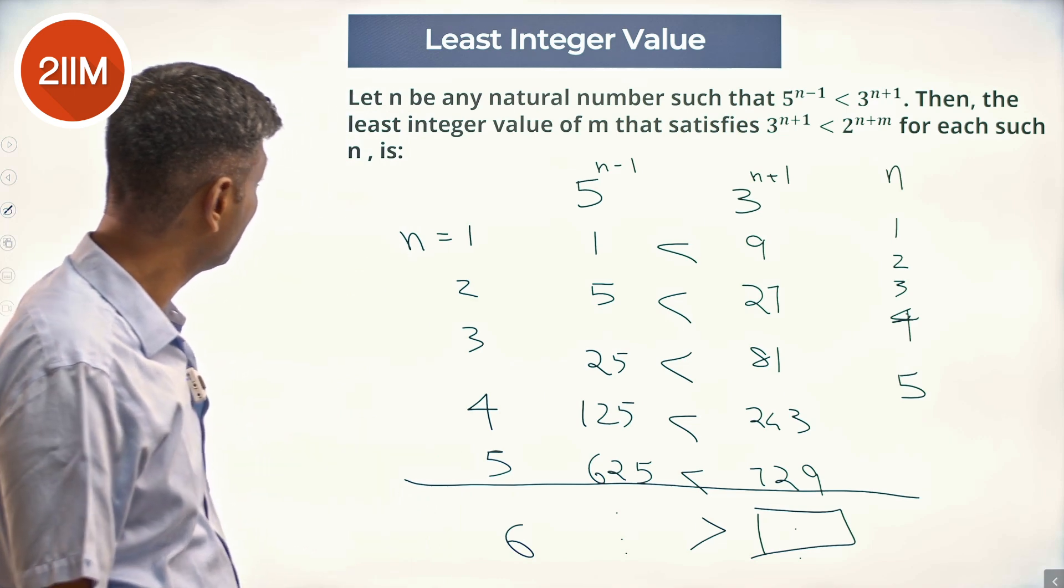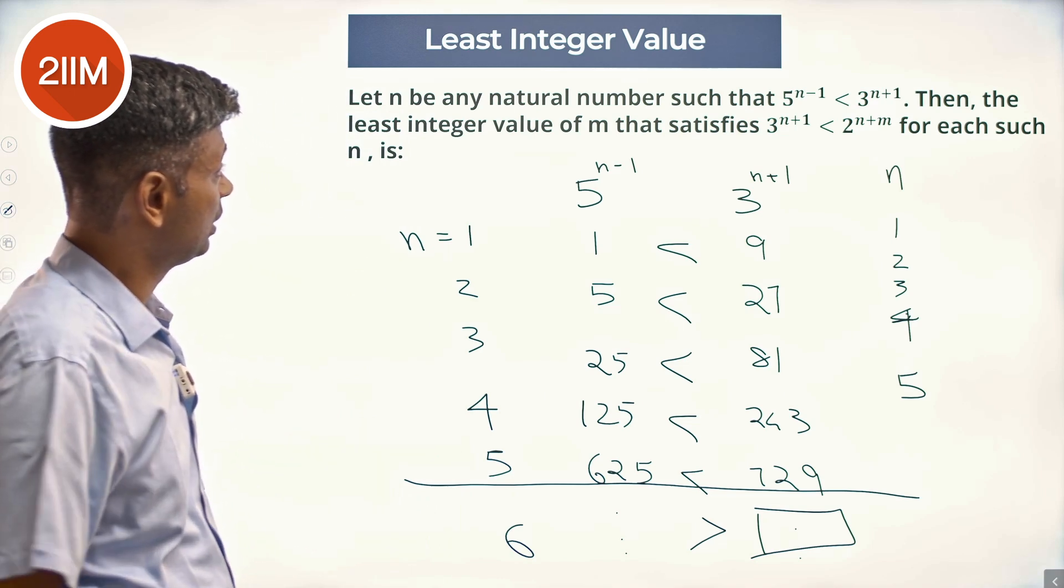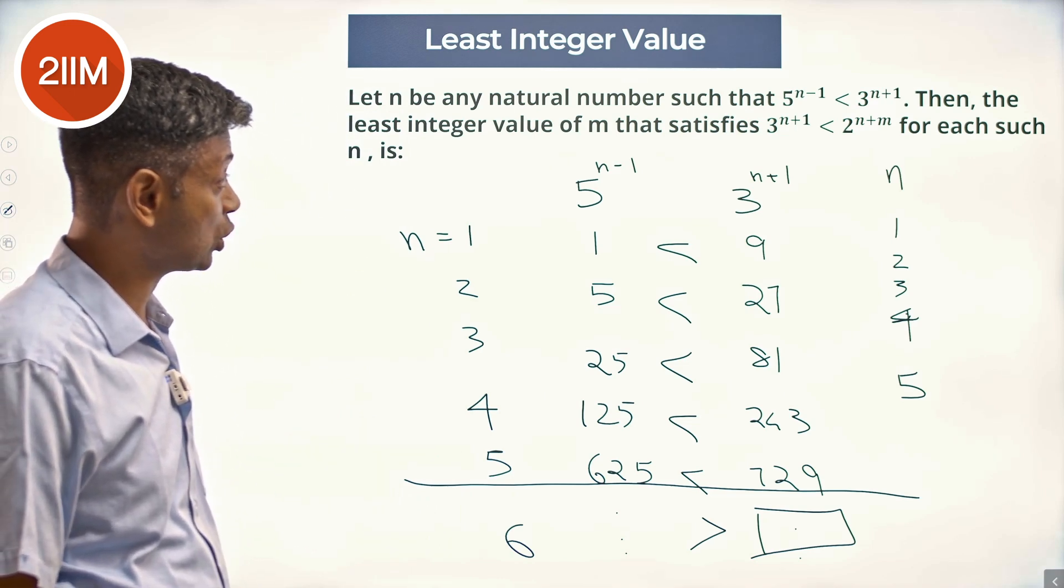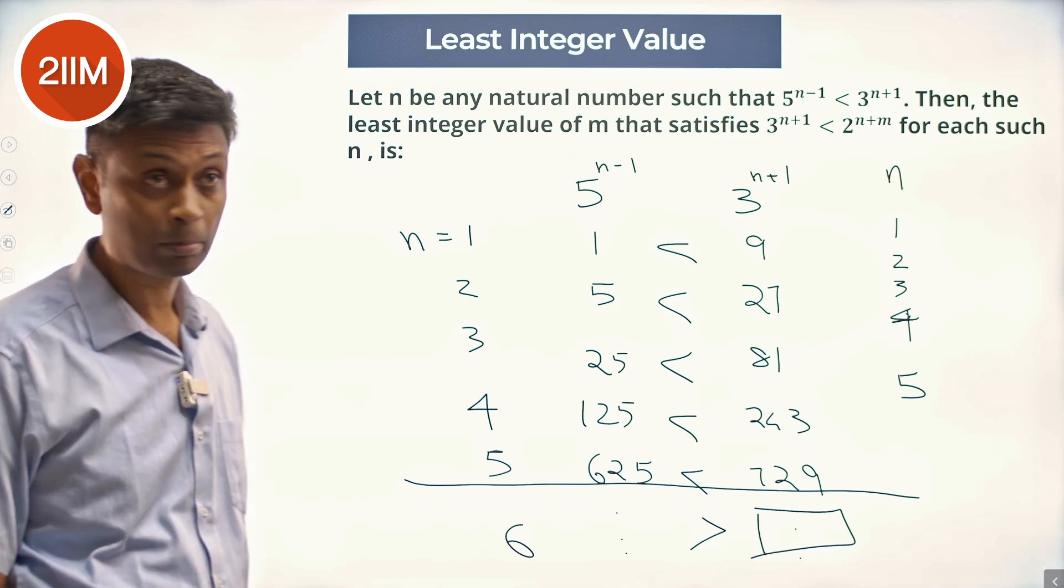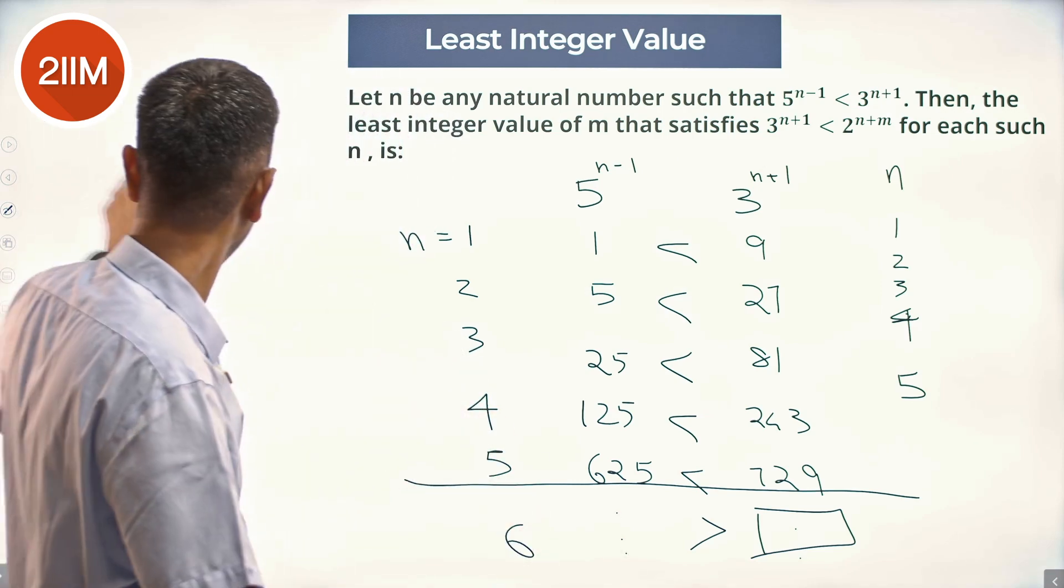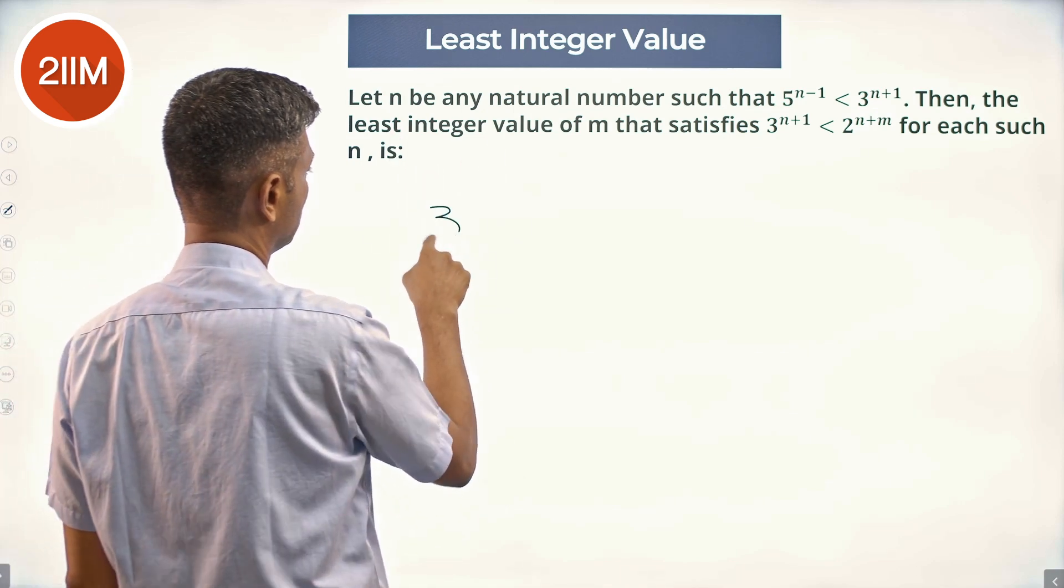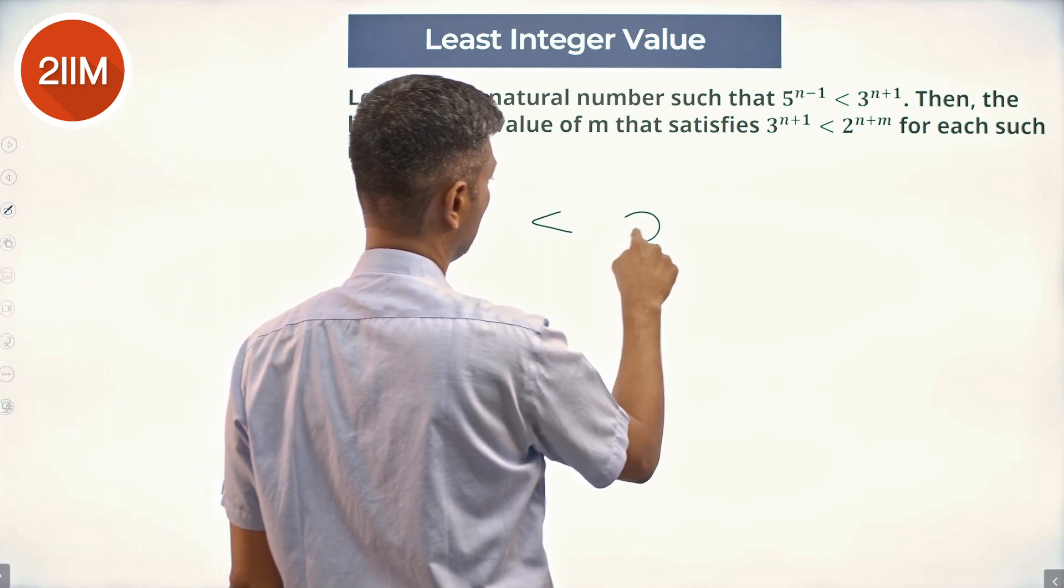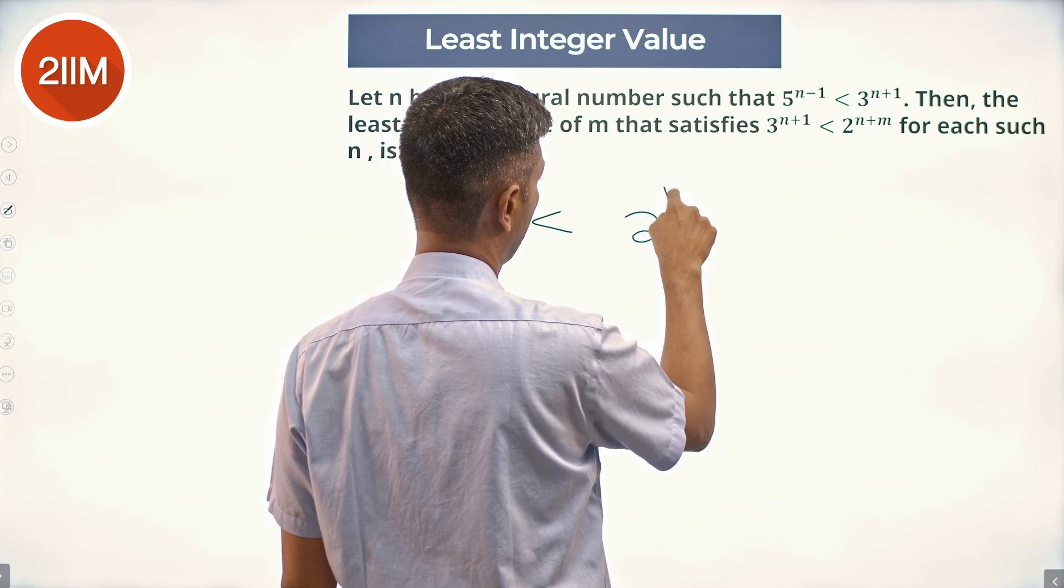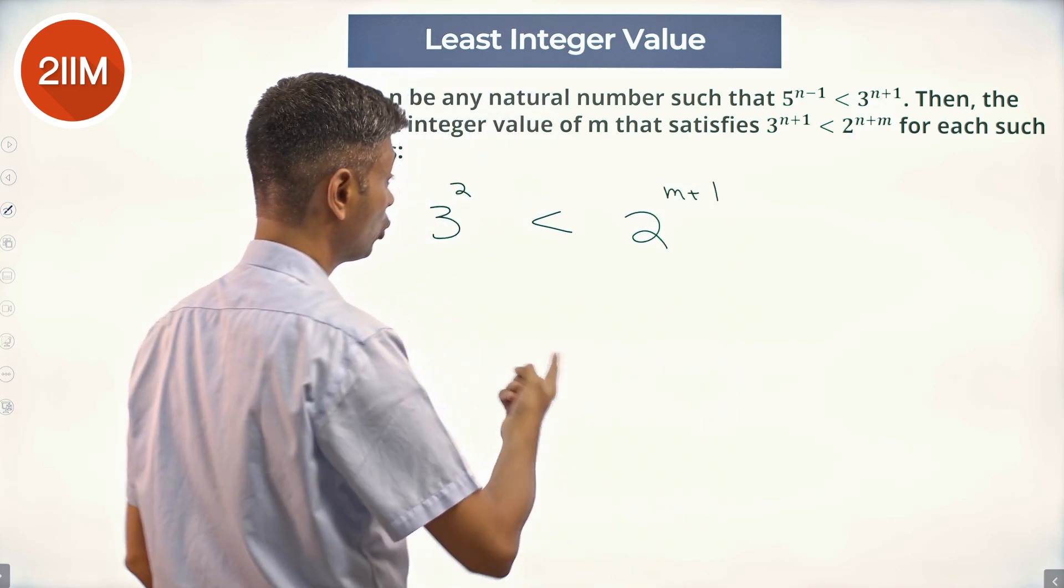Now come to the second part: the least integer value of m that satisfies 3^(n+1) < 2^(n+m). Nice. So n could be 1: 3^2 < 2^(m+1).